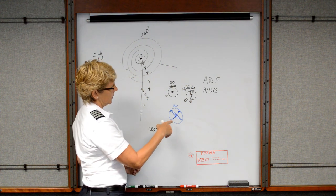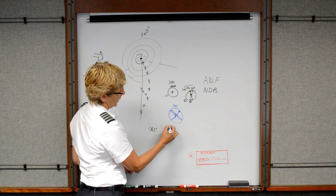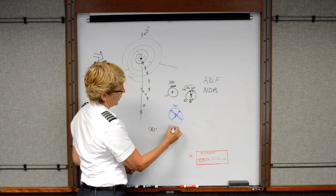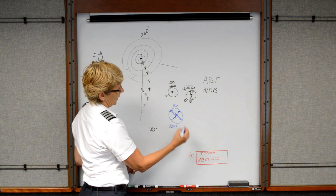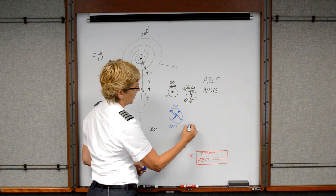So what this information is telling us is the single needle may go to VOR number one and the double may go to VOR number two.